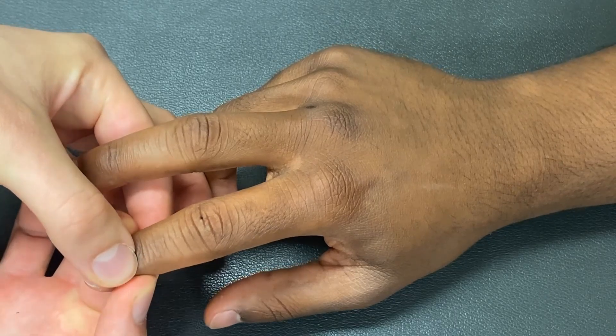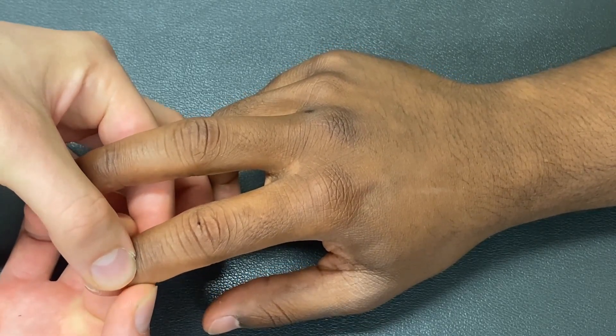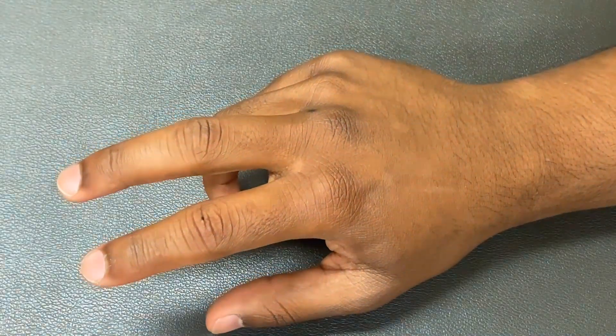A positive test in any of the joints will yield a palpable bulge and the patient may report pain. Ensure to examine all the joints of the fingers using this ballotment technique to examine for effusions.